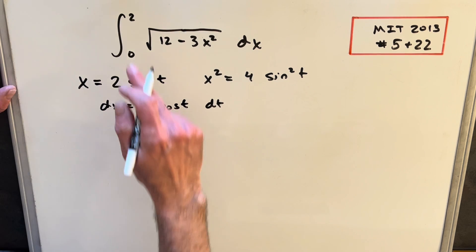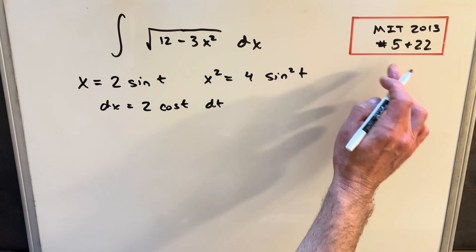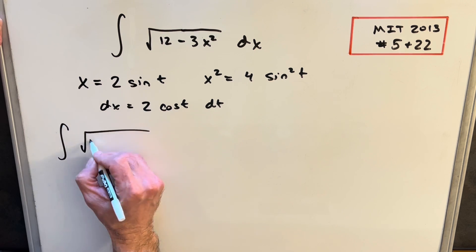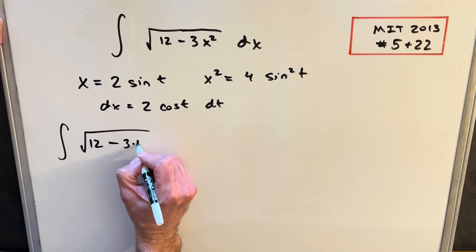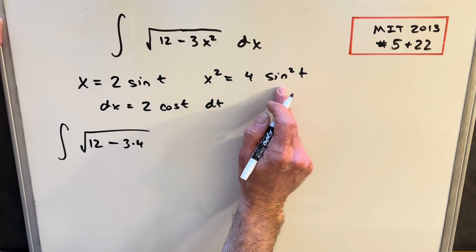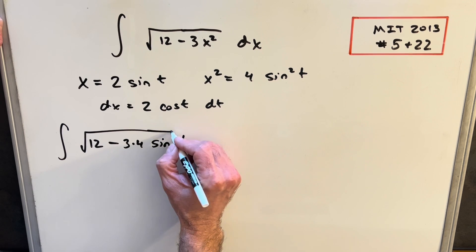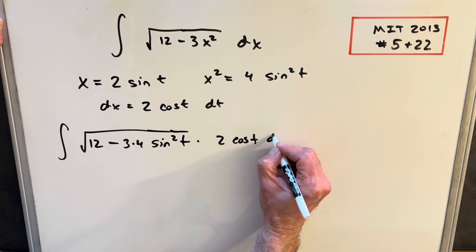Okay, and then we'll make the substitution. What I'm going to do is I'm going to just remove these bounds and ignore that. We'll come back to that later when we're dealing with problem 5. So making this substitution, we're going to have the square root of 12 minus, this is going to be 3 times 4 on this x squared sine squared t. And then we're going to have, outside the integral, we're going to have 2 cos t dt.